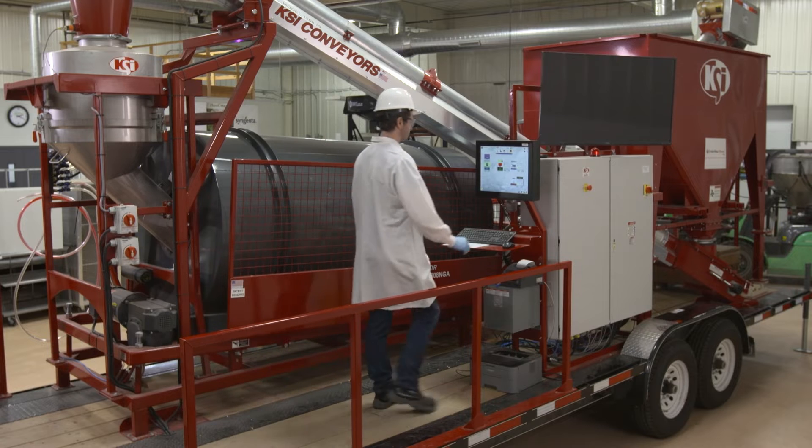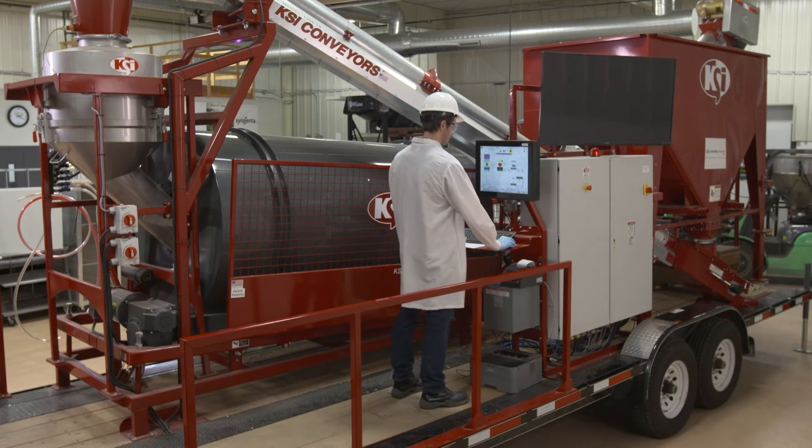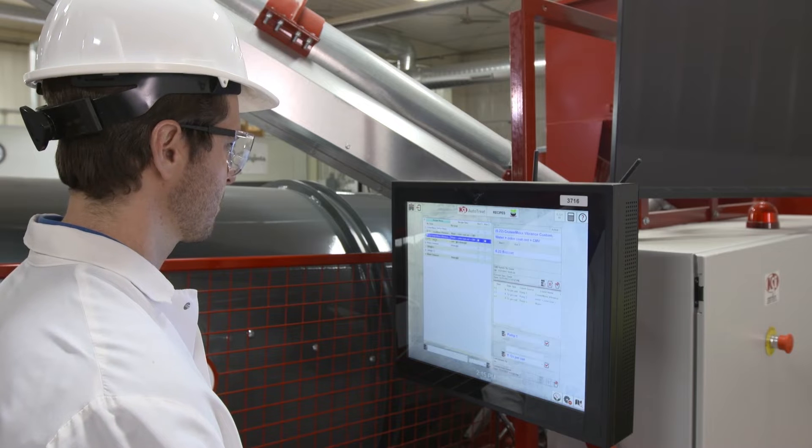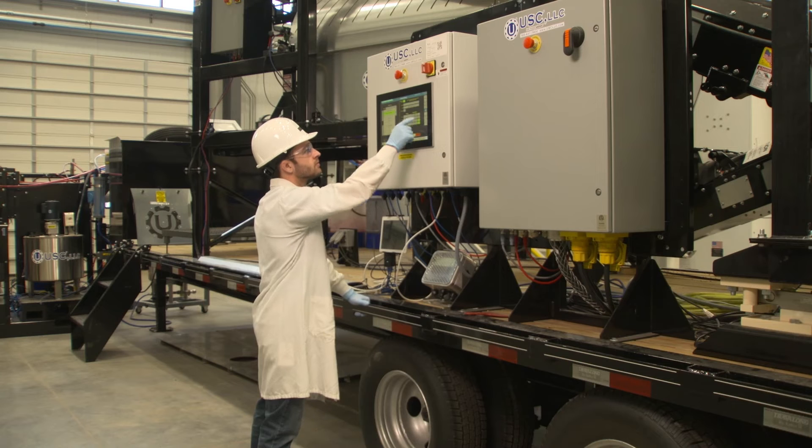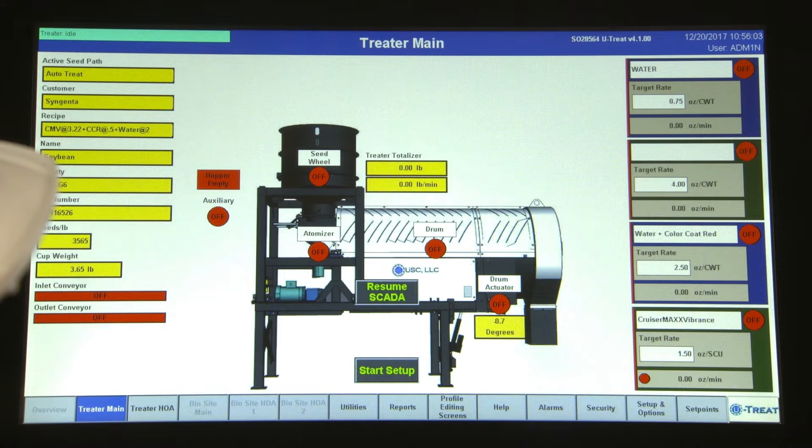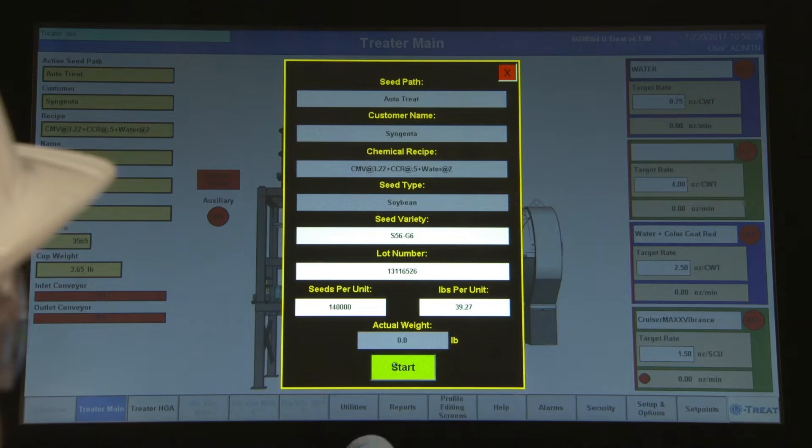There are many treating equipment options available today and the purpose of this video is to help you understand the various components of each treating system. The goal of every seed treatment applicator is to get a consistent flow of seed through the treater while applying the correct amount of product to each seed.